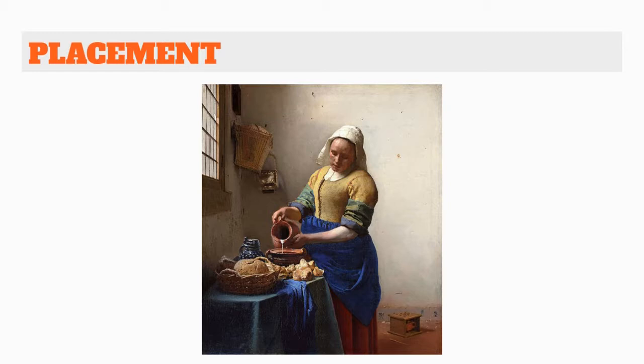Another option for focal points is to use something called placement. Simply by placing something somewhere near the center of your photo, you're going to create a focal point. My eye is drawn very quickly to this woman here in the painting because she is slightly off-center. You don't have to place something directly in the center of your lens, but placing it near the center of the photograph is a great way to use placement to create a focal point.